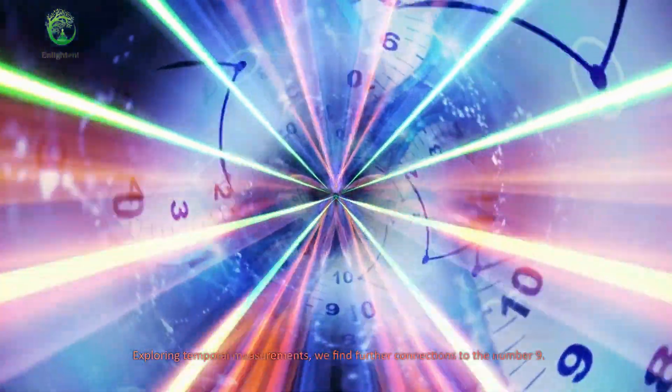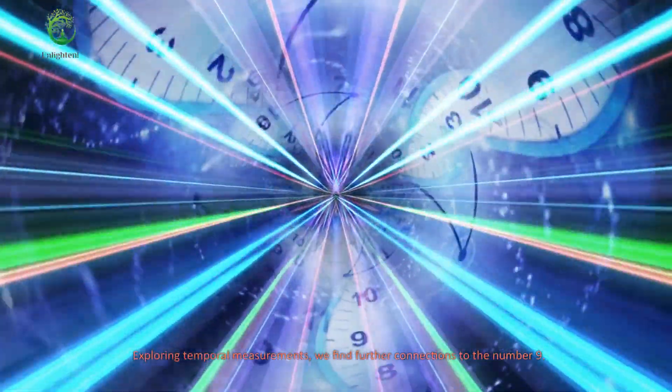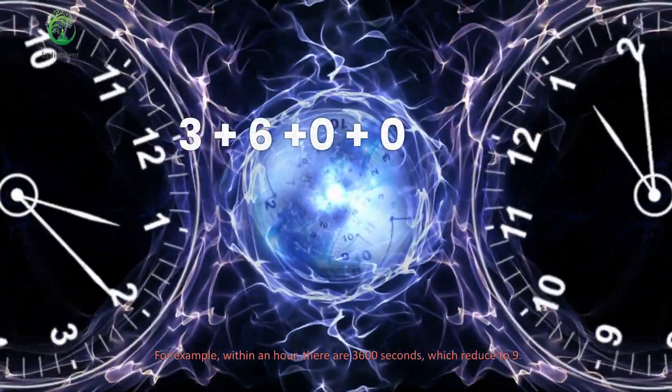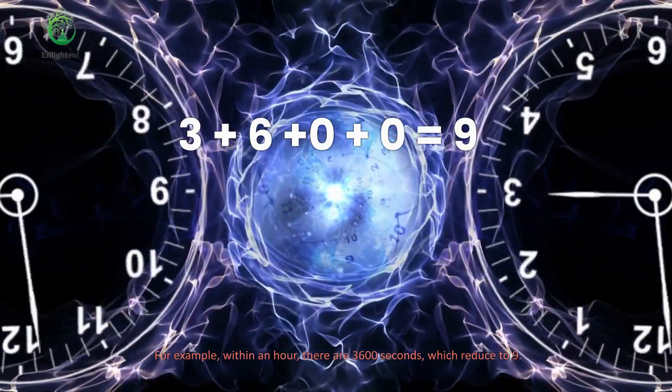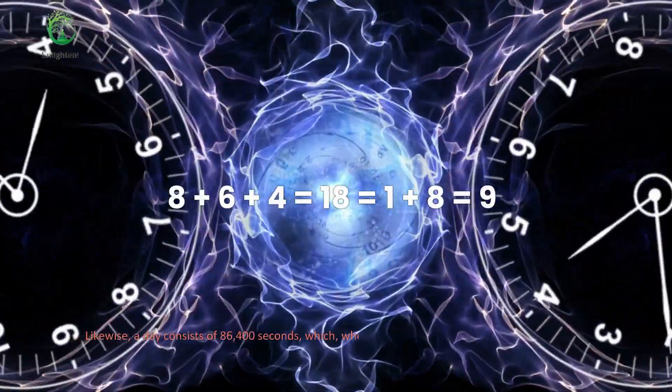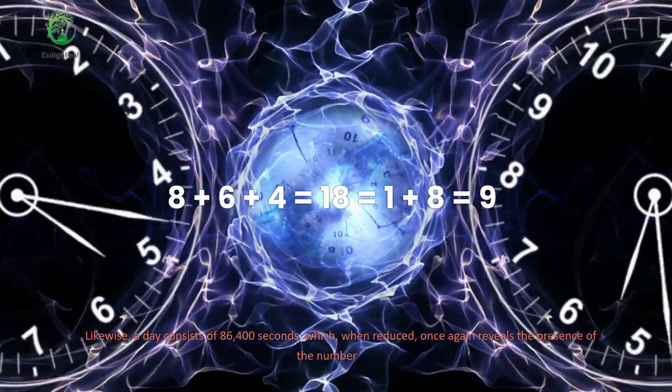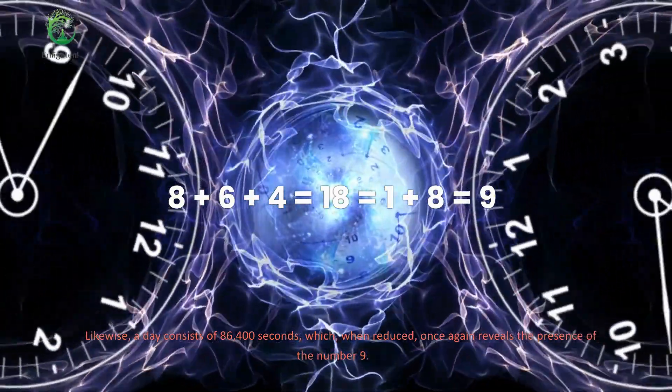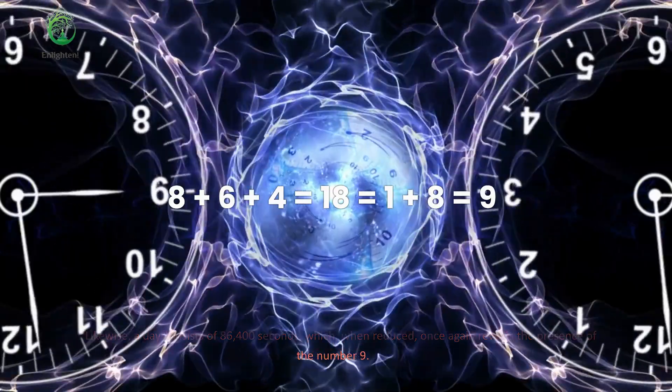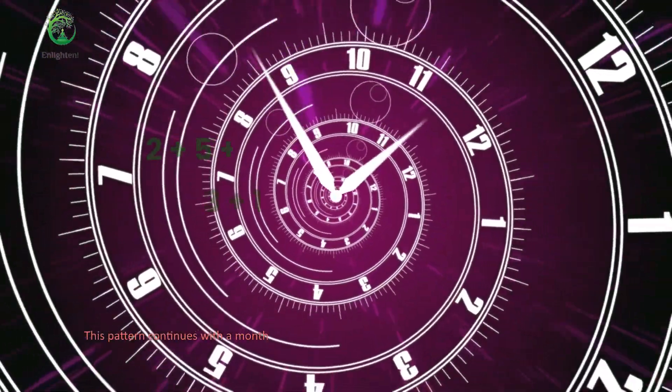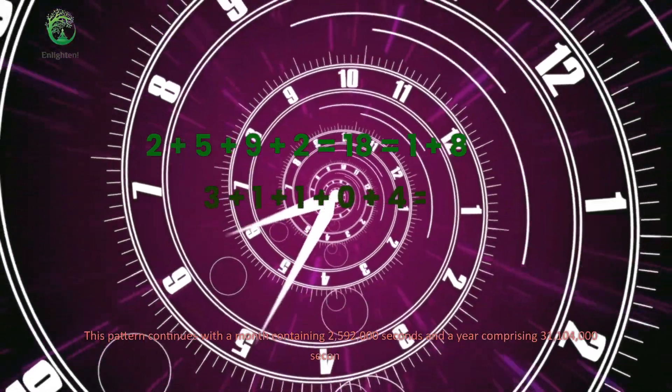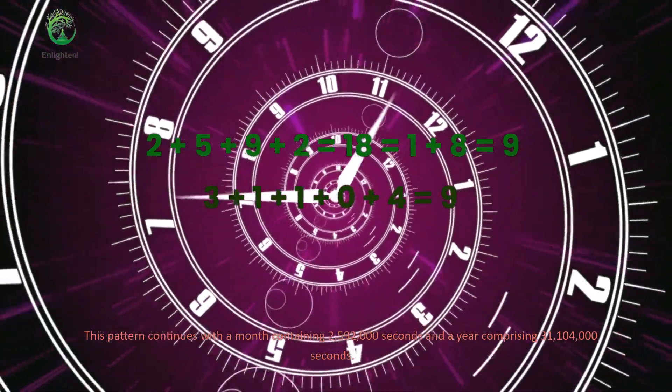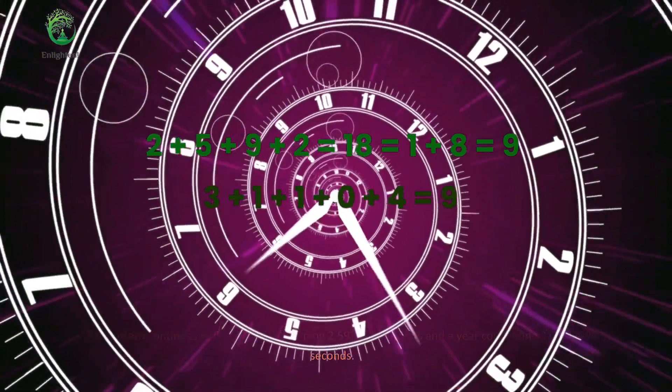Exploring temporal measurements, we find further connections to the number 9. For example, within an hour, there are 3,600 seconds, which reduce to 9. Likewise, a day consists of 86,400 seconds, which, when reduced, once again reveals the presence of the number 9. This pattern continues with a month containing 2,592,000 seconds and a year comprising 31,104,000 seconds.